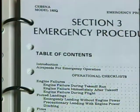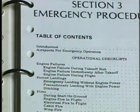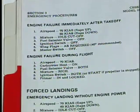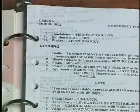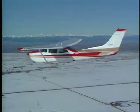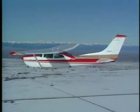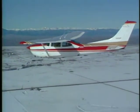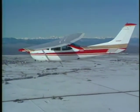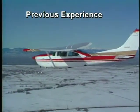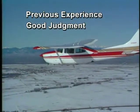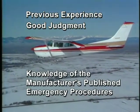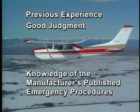Typically, procedures for emergency situations can be found in your POH or AFM. However, it is impossible to cover every failure or malfunction. If your POH or AFM does not have procedures for a specific emergency, such as an asymmetrical flap extension, you must rely on previous experience, good judgment, and a knowledge of the manufacturer's published emergency procedures to form an appropriate plan of action.